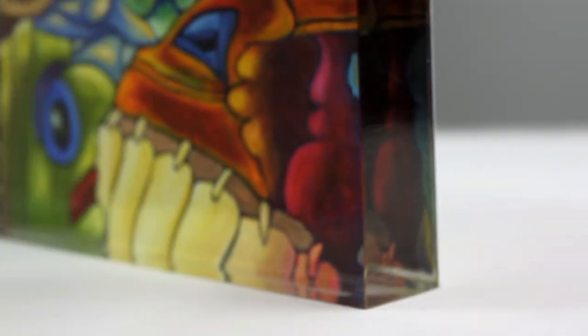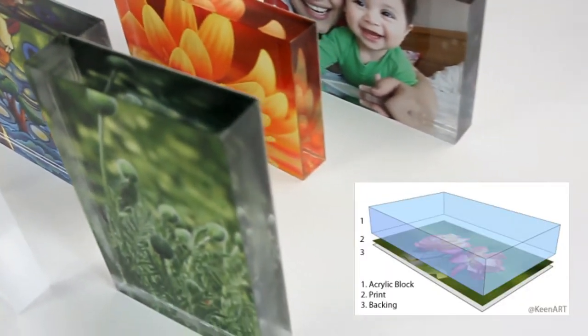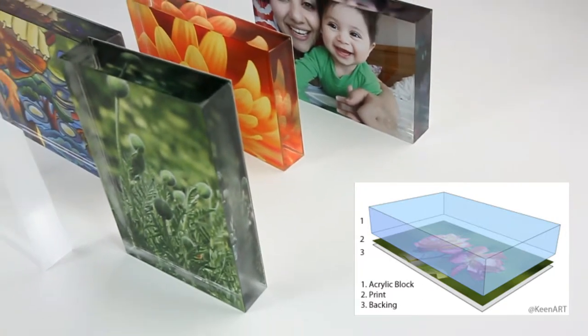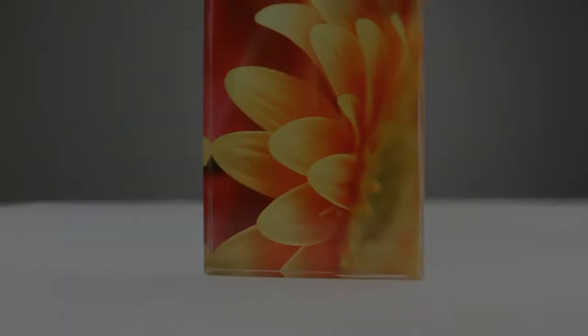Acrylic blocks are free-standing tabletop face mounts on a one-inch thick acrylic block. These are made of three layers: the print is sandwiched between a one-inch thick acrylic block and one-millimeter protective backing. These are perfect to display horizontally or vertically.